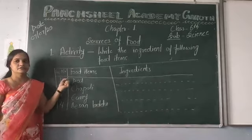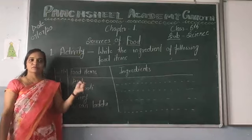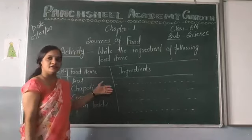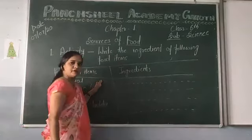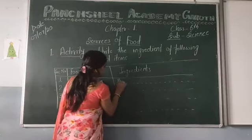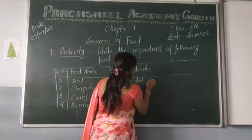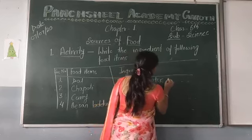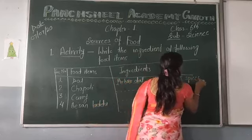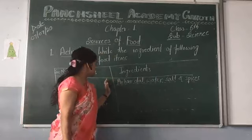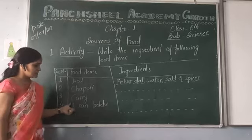For example, the ingredients of dal — in our home we eat varieties of dal. To prepare dal, we require dal as the main ingredient, along with water, salt, and spices. All these are the main ingredients of dal. Now you have to write the ingredients of chapati, curry, and the remaining items.